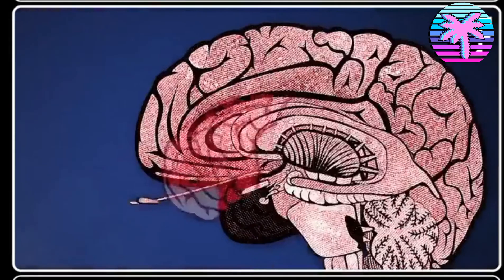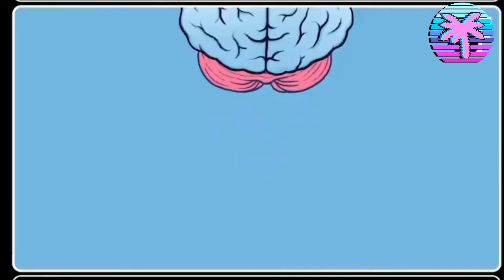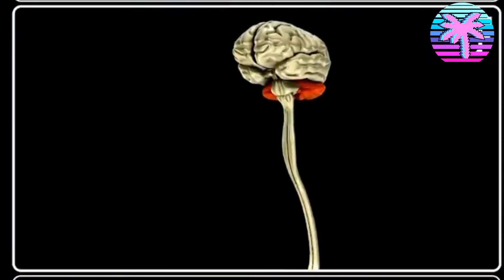The cerebellum located under our brain has been known as the structure that controls balance and movement. However, according to recent research, the cerebellum has more functions than is known.